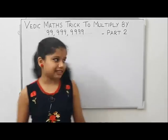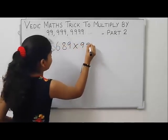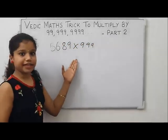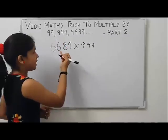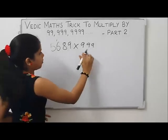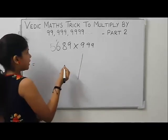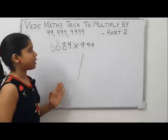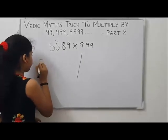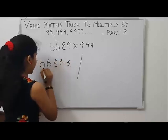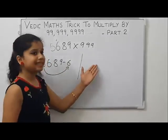Let us start with an example. Let us take 5689 into 999. Here the number of digits are four but the number of nines are only three. Put a mark here by leaving three digits from the right to make the number of digits equal to the number of nines. Now put a partition here to separate the LHS and RHS part. We need to find the LHS part — subtract the next number of 5 from 5689. Five's next number is six.